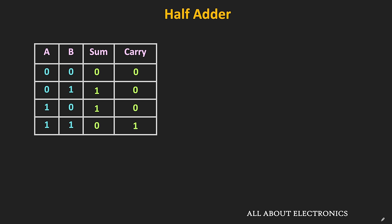As you can see, the sum output is equal to 1 when A is 0 and B is 1, or when A is equal to 1 and B is equal to 0. The boolean expression of the sum output is A-bar dot B plus A dot B-bar, which is equal to A XOR B. Similarly, the carry bit is equal to 1 when both A and B are equal to 1, so the boolean expression of the carry bit is A dot B.